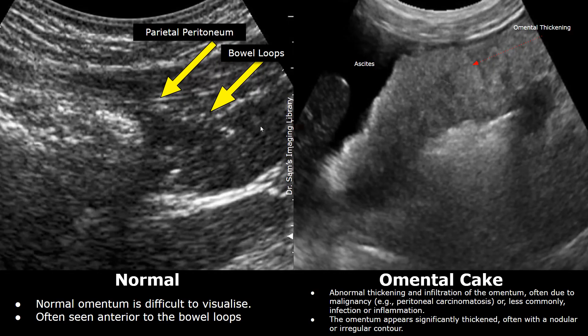The omentum is a fold of peritoneum that connects the stomach to other abdominal organs. It consists of the greater omentum, which hangs down from the stomach and covers the intestines, and the lesser omentum, which connects the stomach and duodenum to the liver.